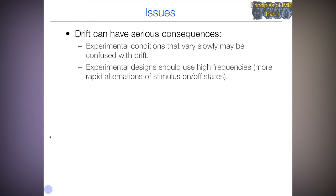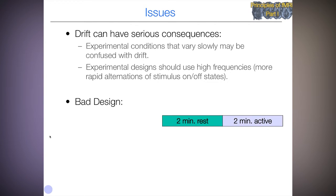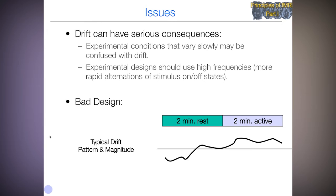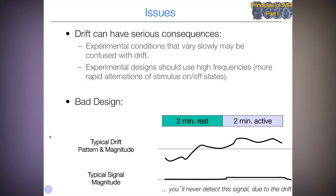Drift can have serious consequences, and it's important that experimental conditions that vary slowly not be confused with drift. Experimental designs should use high frequencies — more rapid alternations between stimulus on/off states. Here's an example of a bad design: two conditions, say finger tapping and rest, with two minutes of finger tapping followed by two minutes of rest. This is what the typical drift pattern might look like, and you'll never be able to detect the little signal due to the drift. However, if we do 20 seconds on, 20 seconds off, we have a hope of being able to separate the signal from the drift. This becomes an important component in designing our experiments.